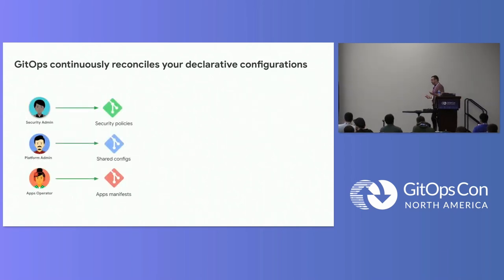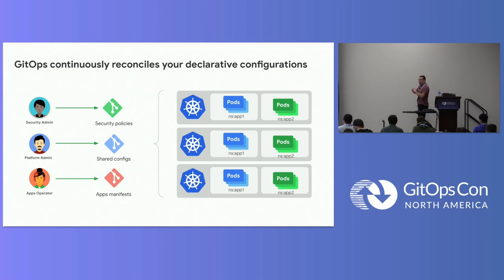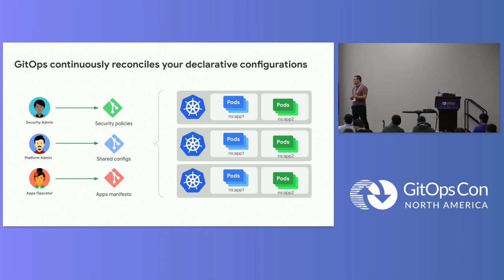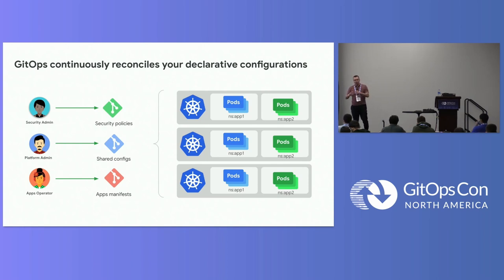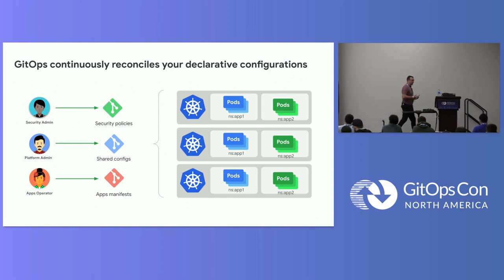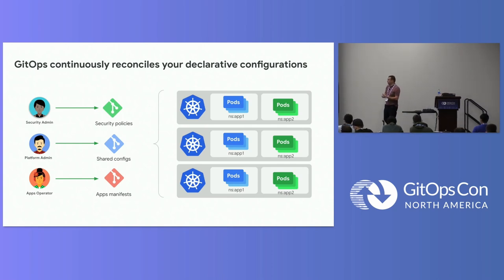When you have clusters and want to deploy your configuration, you have a fleet of clusters with different personas building their own Kubernetes manifests. It could be security policies like Gatekeeper policies, shared configs, role bindings, cluster role bindings, or more specific app deployments. The usual way might be a push mechanism — kubectl apply and other CI/CD tools like Jenkins.